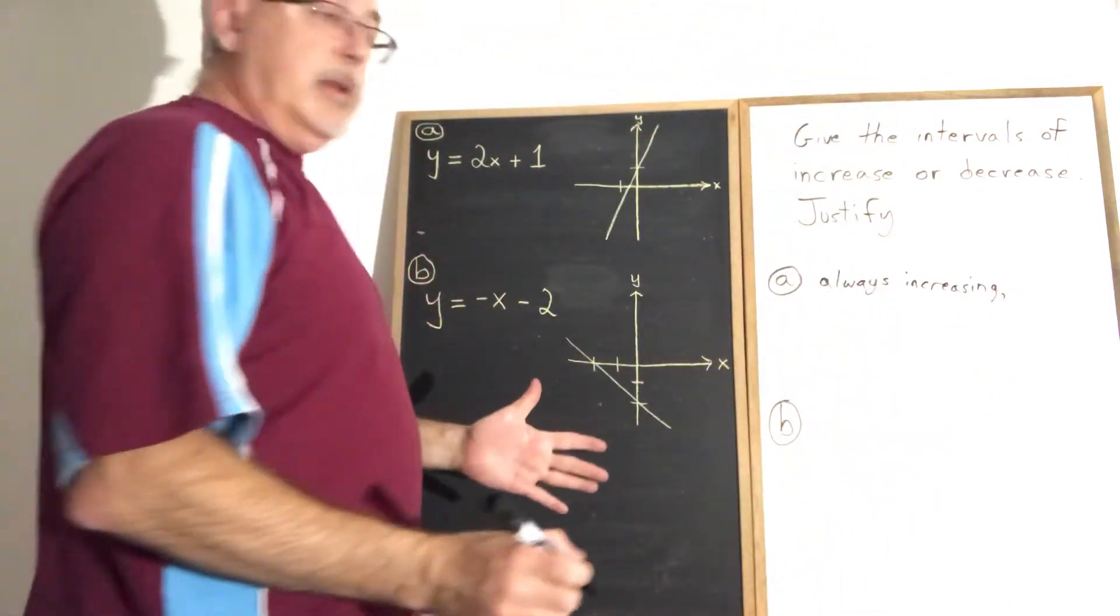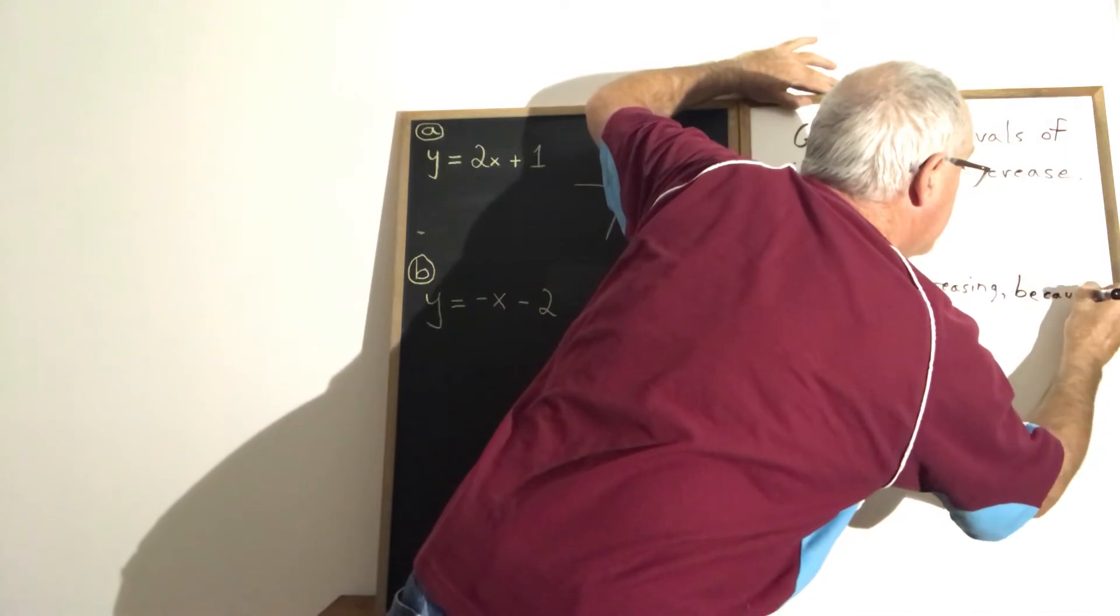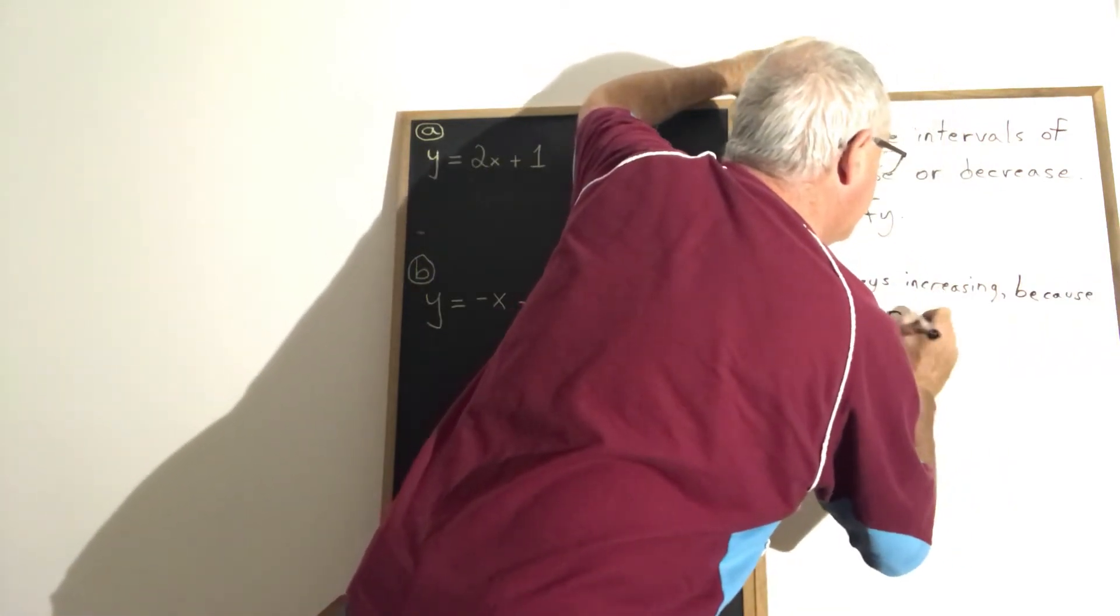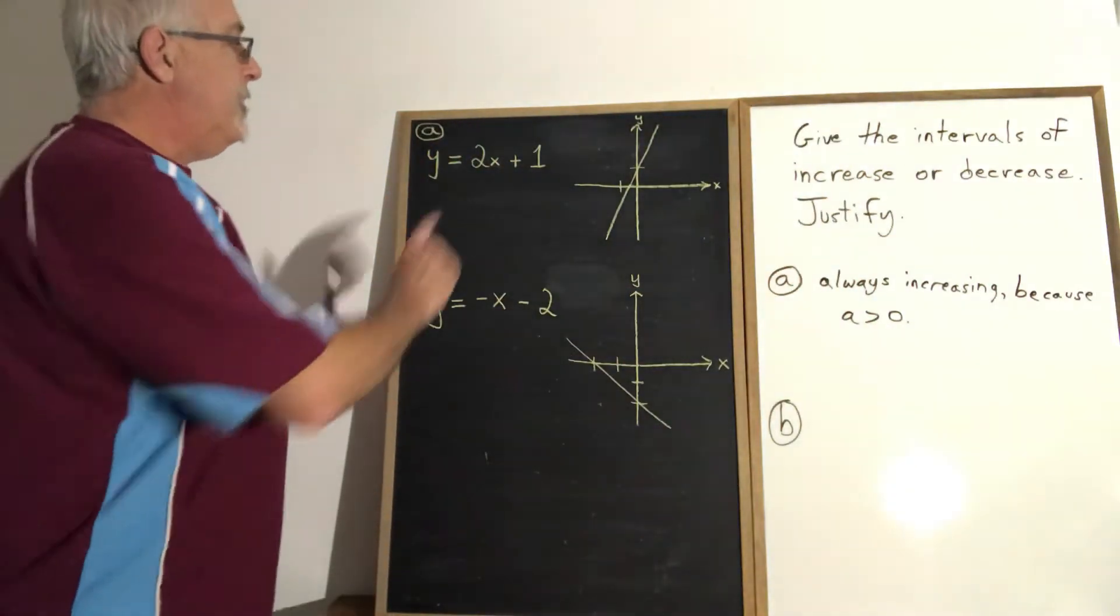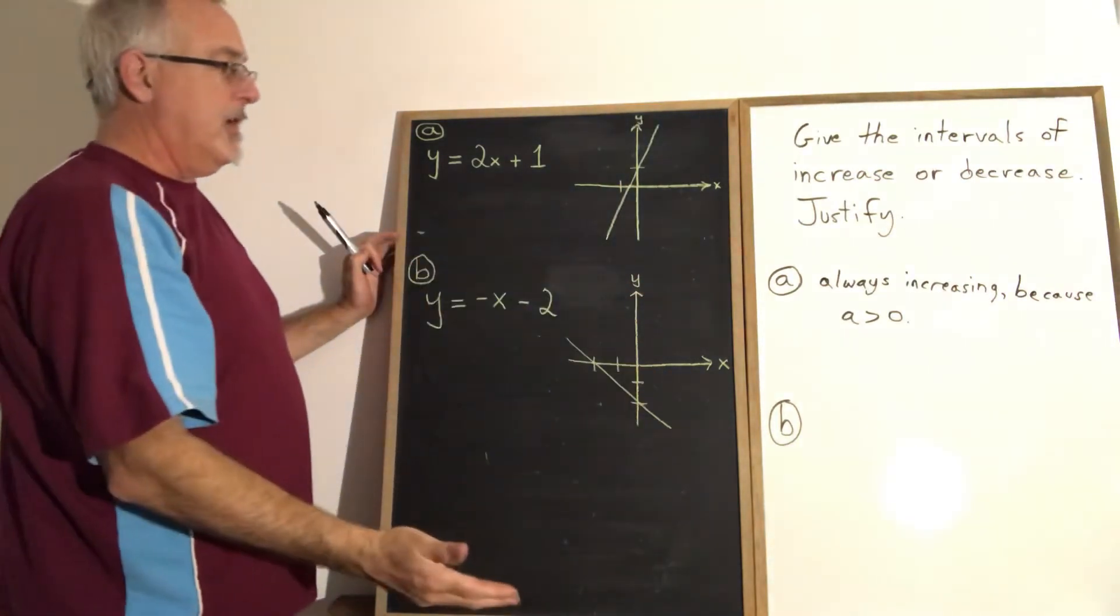And then my justification is because the slope A is positive, which I can write because A is greater than zero. When you have a positive slope, the line will always increase as you move from left to right across the graph.